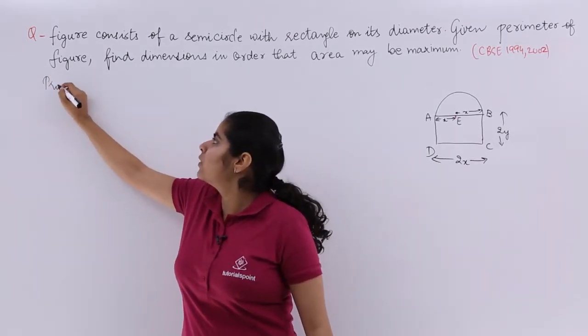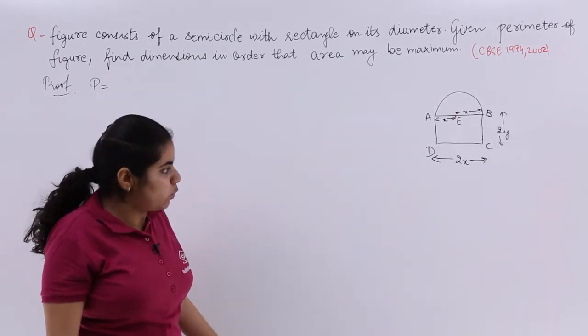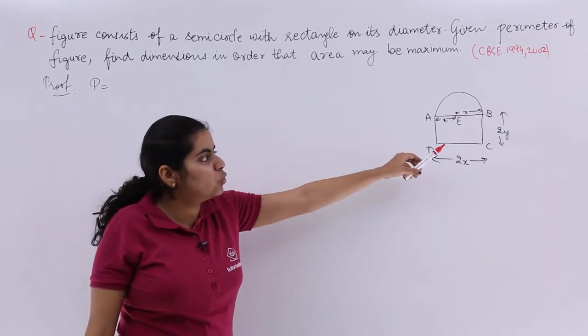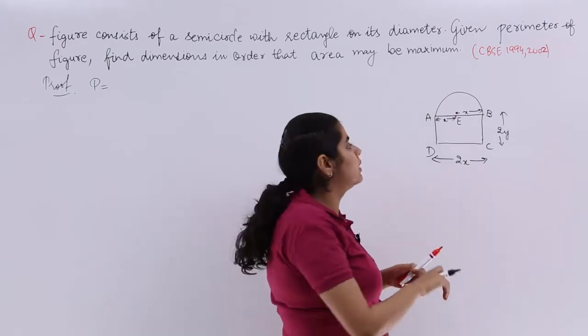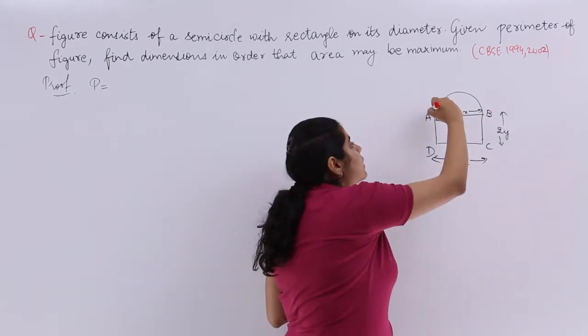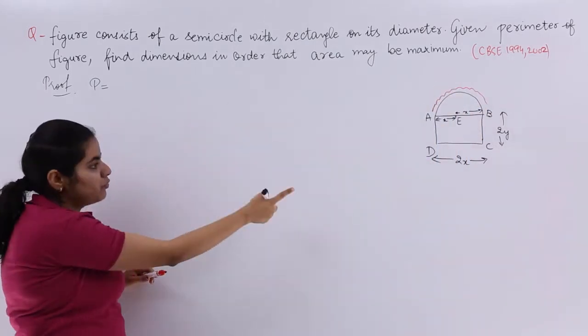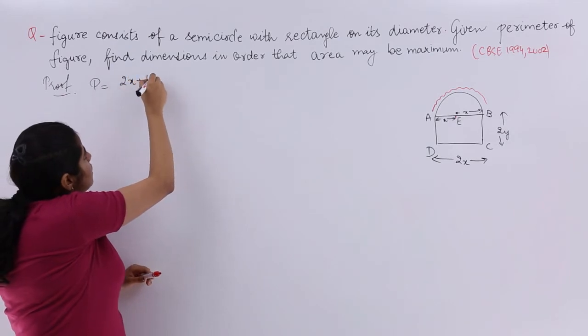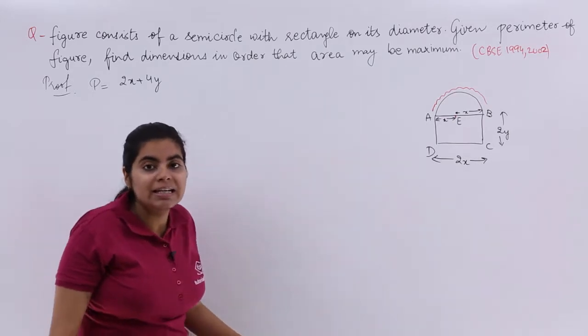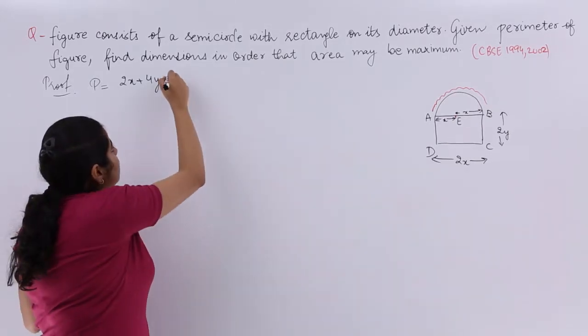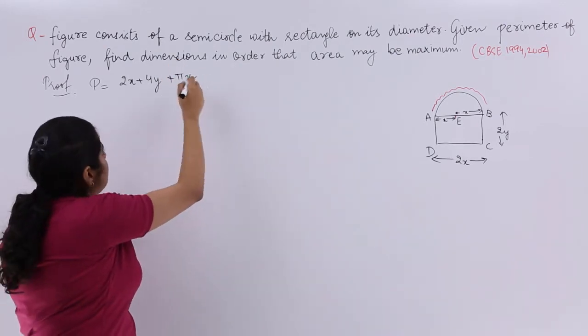I write proof. It says perimeter is given. So let us find out P which is the perimeter. Perimeter of the figure is what? It is 2y plus 2y, 2y here plus 2y here plus 2x here and you are not going to consider AB but you are going to consider the curve AB. So perimeter is sum of all sides. So it is 2x plus 4y plus this curve which is nothing but πr, not 2πr but πr. So it is πx. Now this is P.